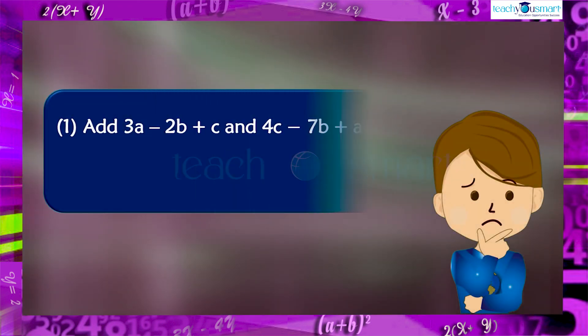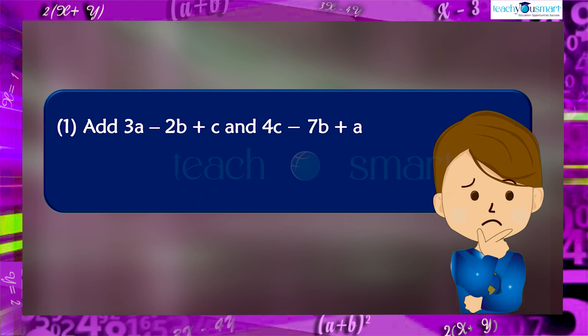1. Add 3a minus 2b plus c and 4c minus 7b plus a. 2. Subtract minus 9x square minus 11y from 12y minus 3 plus 72x square.